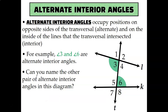We also have alternate interior angles, which is very similar, except instead of being on the outside of lines L and K, it's in between lines L and K. Angle 3 and angle 6 are alternate interior angles — they're alternate because they're on opposite sides of line T, and interior because they're in between line L and K. The other pair is angle 4 and angle 5, also on opposite sides of line T and in between lines L and K.